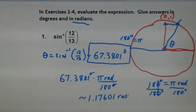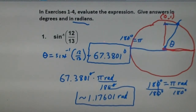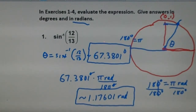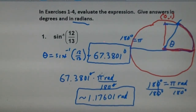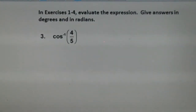We put approximately equal to because most of these angles involve irrational numbers. So this arc length in radians is essentially 1.176 times the radius of the circle. On to problem 3.